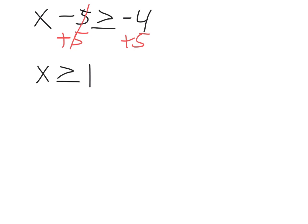And once you have that, then you need to graph it on a number line. So you have your number line, and then you need to make a solid dot at 1 because it's or equal to. So a solid dot at 1, and then shade to the right.